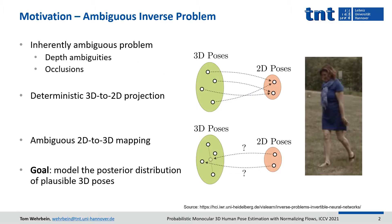Monocular 3D human pose estimation is an inherently ambiguous problem due to depth ambiguities and occlusions. It can be seen as an ambiguous inverse problem since it has a deterministic forward process, namely the projection from 3D to 2D, with multiple feasible inverse mappings. Nonetheless, most existing works avoid uncertainty modeling and only estimate a single solution.